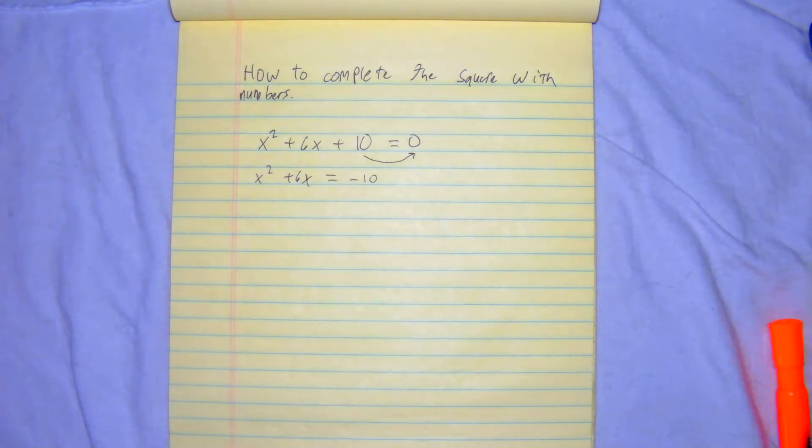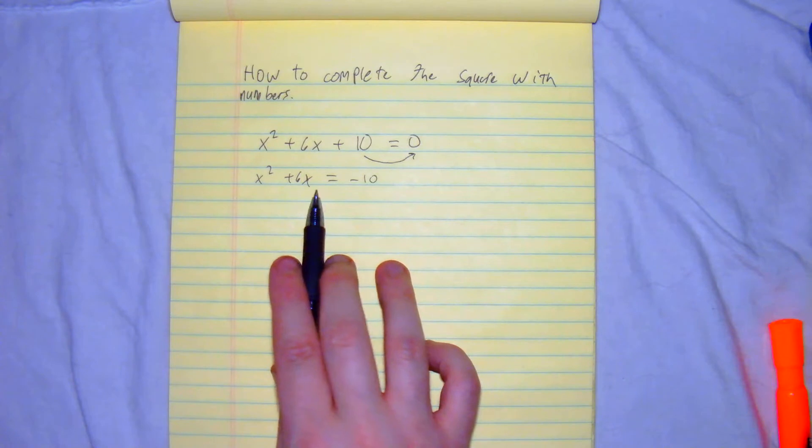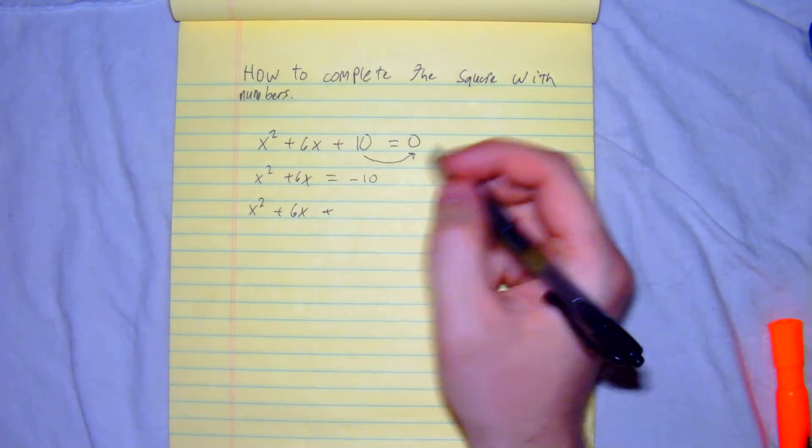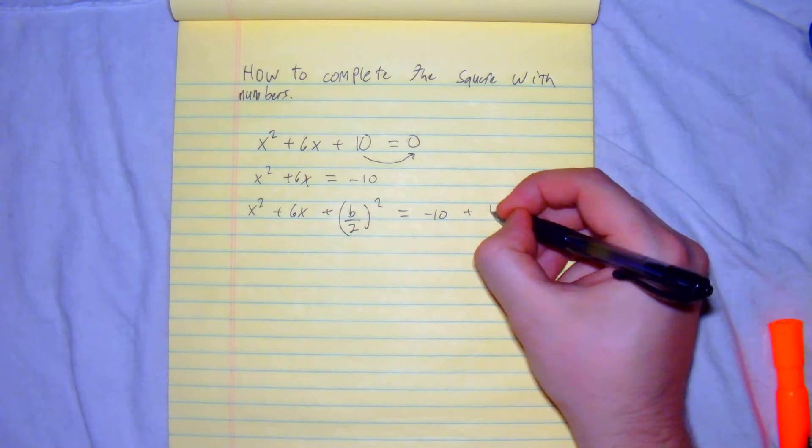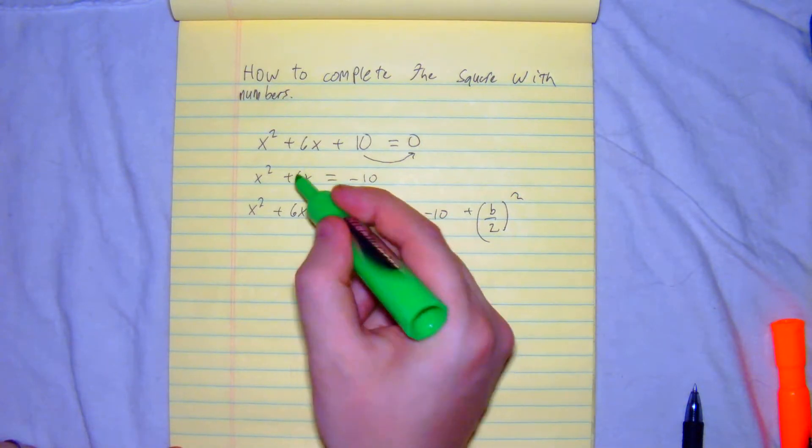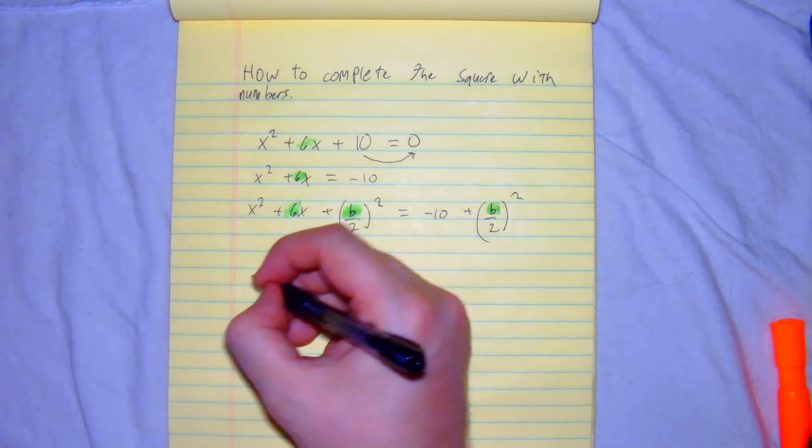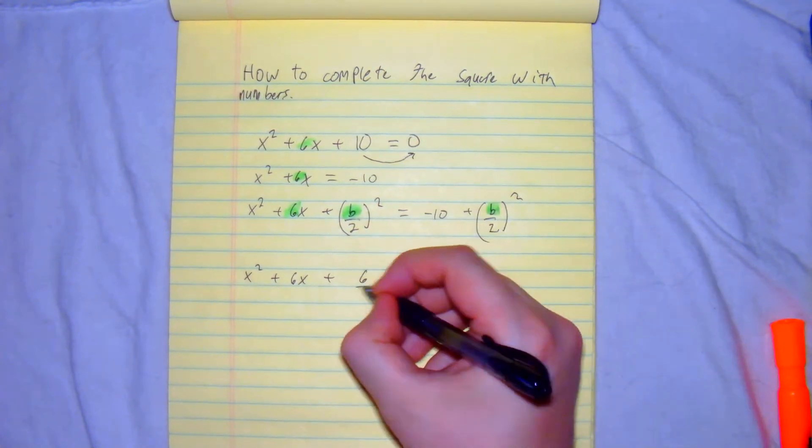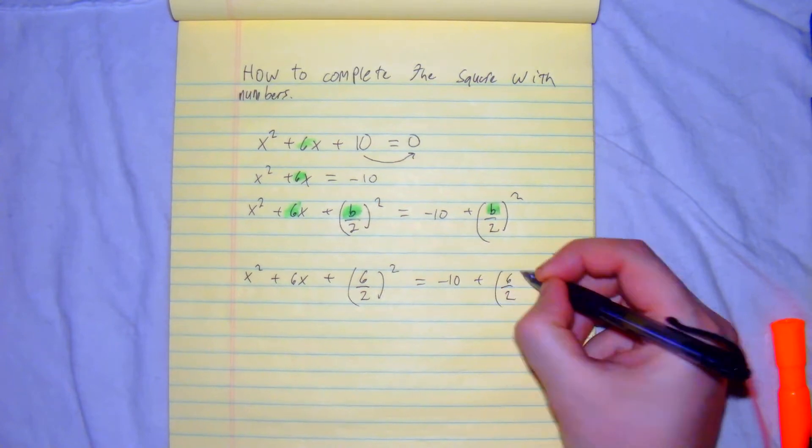The next part we're going to do is we're going to divide this by 2 and then square it to get our new c value. So what we have here is x squared plus 6x plus b over 2 squared is equal to negative 10 plus b over 2 squared. And if you can see right here, our b value, this is our b value. So we're going to substitute that in here. So now we have x squared plus 6x plus 6 over 2 squared is equal to negative 10 plus 6 over 2 squared.